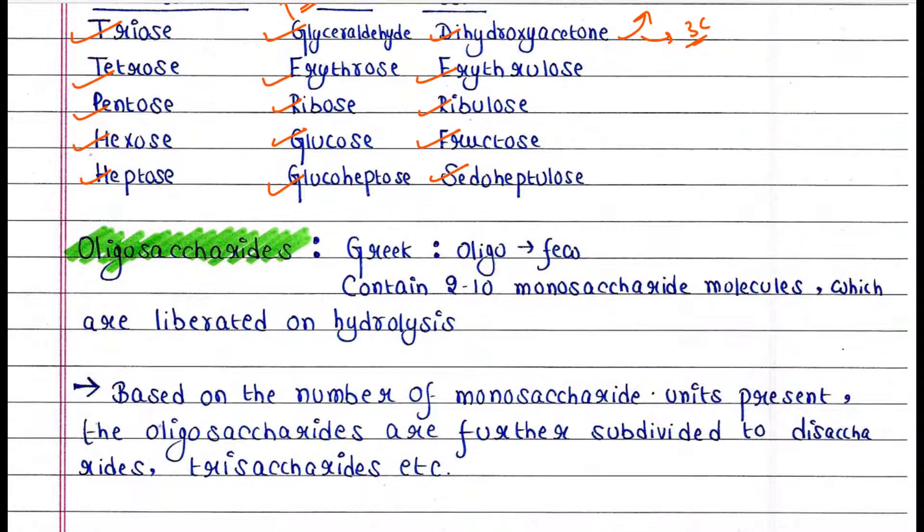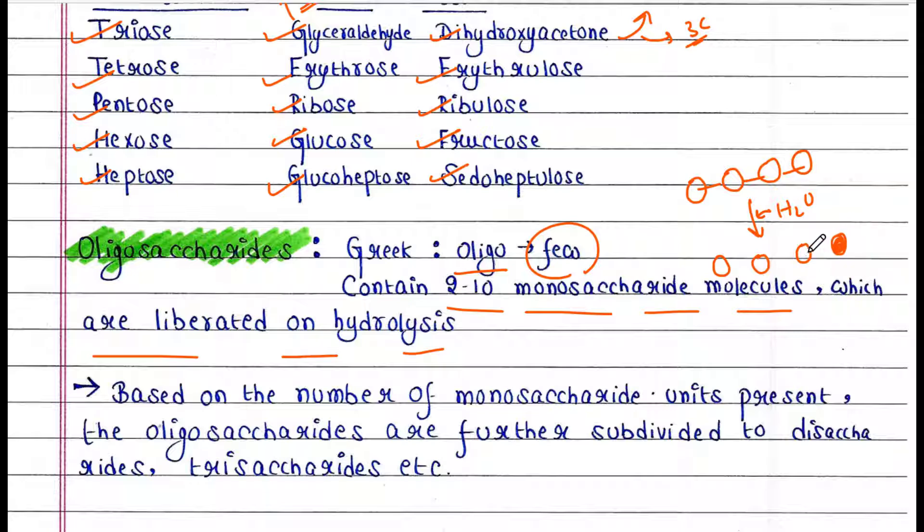Next is oligosaccharides. So in Greek, oligo means few. Why it is named so? Because oligosaccharides contain 2 to 10 monosaccharide molecules which are liberated on hydrolysis. That means suppose here we have 4 monosaccharide molecules in this oligosaccharide. Now you apply water and it will break down this oligosaccharide and 4 individual monosaccharides will be generated.